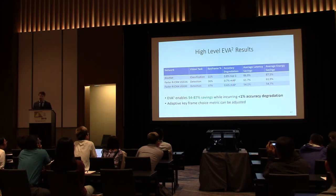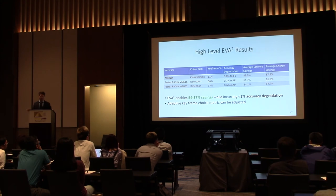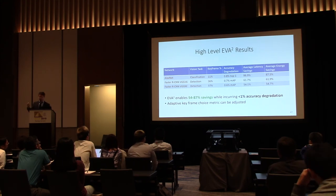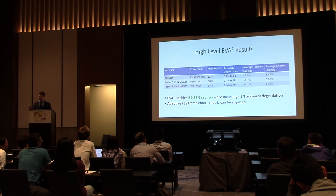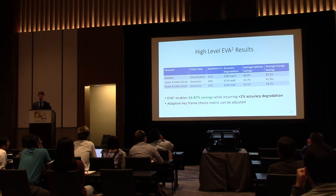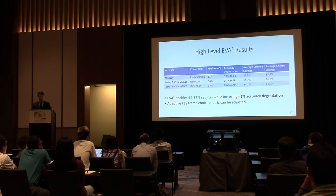EVA Squared is remarkably effective, enabling 54 to 87% savings in energy and latency, while incurring less than 1% accuracy degradation. That degradation threshold is tunable by adjusting the keyframe choice metric. We tested on both classification and detection datasets, finding more sensitivity to motion in detection — since bounding boxes must move correctly. Keyframe percentages are very low overall.